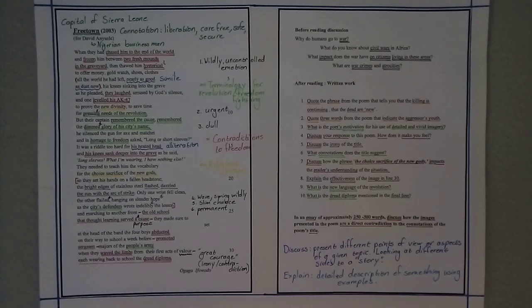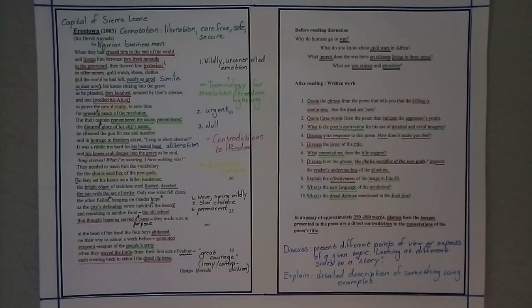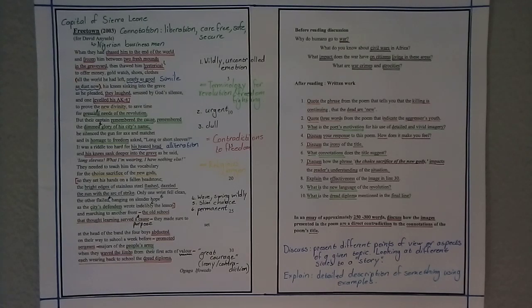Then we have a but. Now, a but usually indicates change in tone, change in perspective, change of thought, change of idea, going on to another track. But their captain remembered the cause. So, remembered the reason why they were fighting. Remembered the dim glory of his city's name. And then he puts away the gun, but he replaces it with an axe and a machete. Now, a machete is an extremely long, viciously sharp blade, very often used for cutting away vegetation, when making a path, cutting down sugar cane, things like that. And in homage to freedom, asked, long or short sleeves.